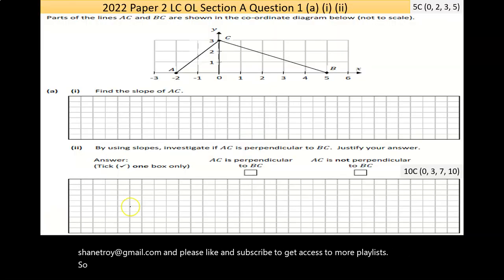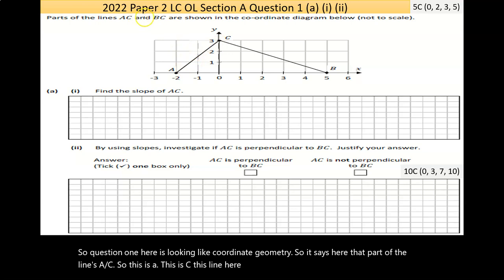Question one here is coordinate geometry. It says here that part of the lines AC, so this is A and this is C, this line here, a line segment, and BC, this is BC here, are shown in the coordinate diagram below. They're saying it's not to scale.